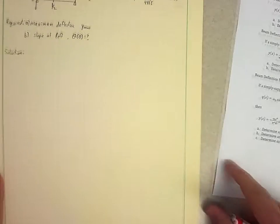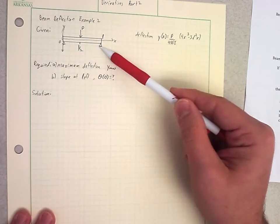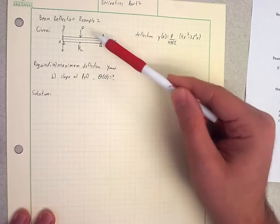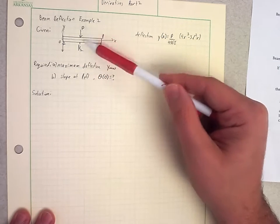So if we set up our problem, simply supported means we have the support on each end, length of the beam L, the load acts in the middle here at L over 2, halfway down the beam.